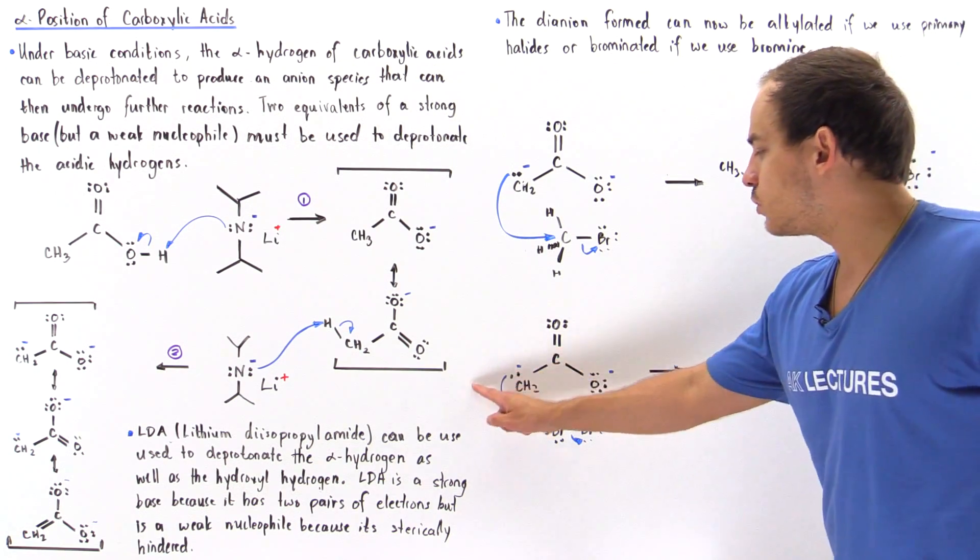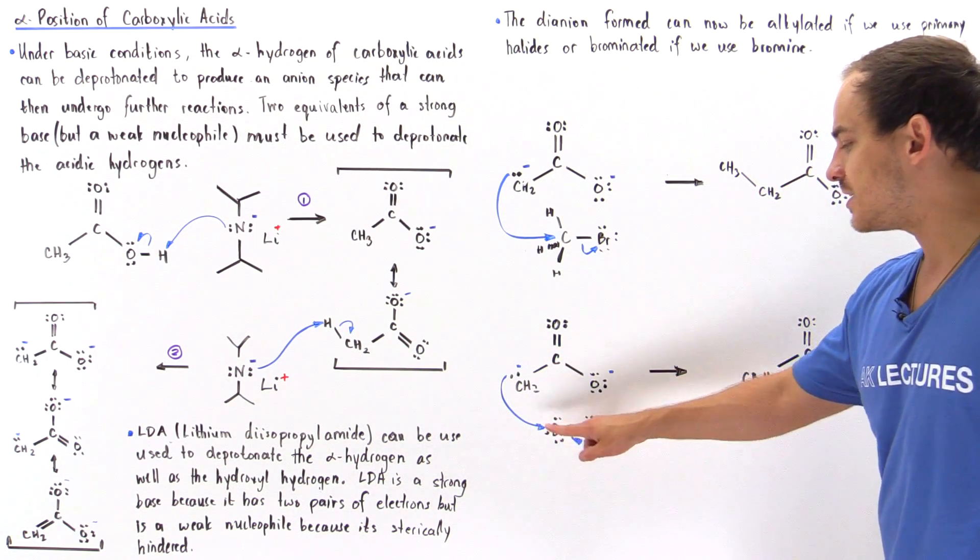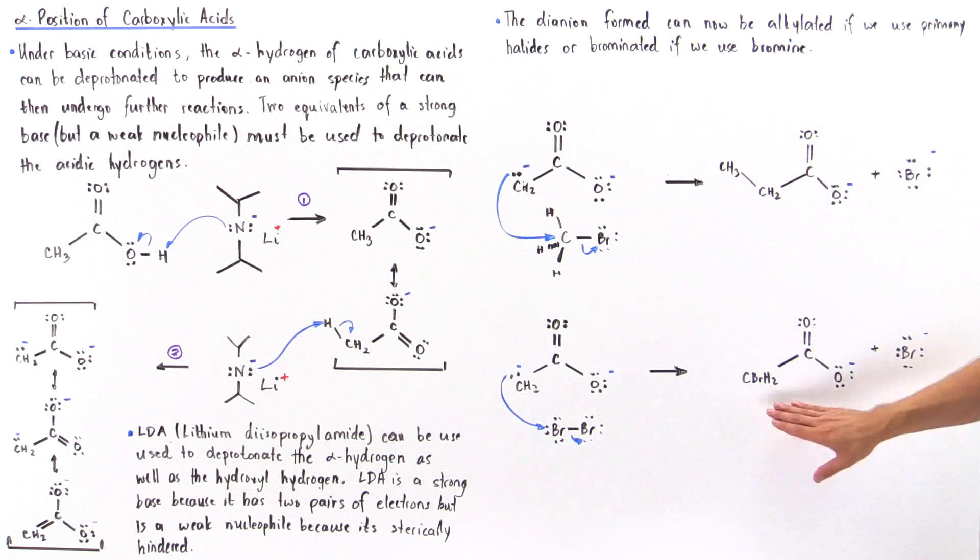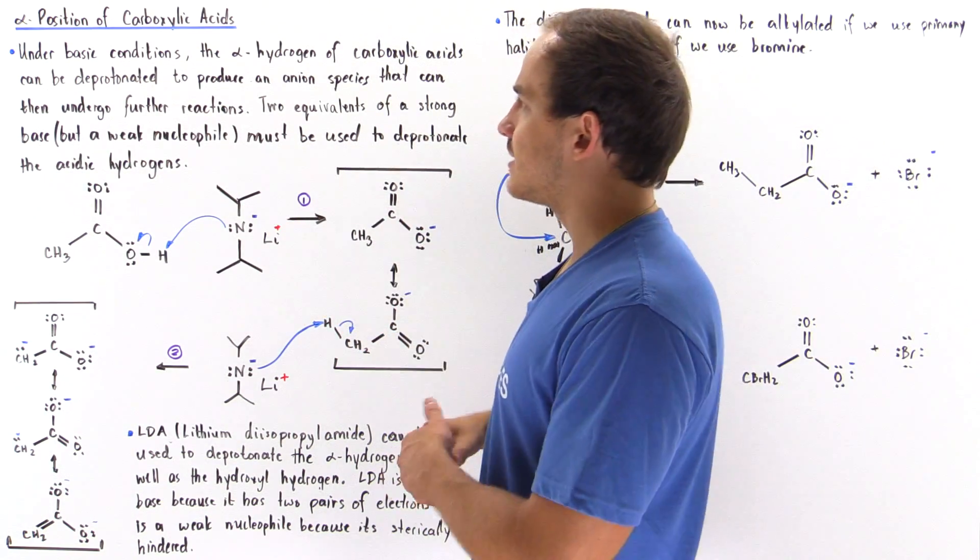So we have a nucleophilic SN2 reaction taking place, this bond breaks off, and we basically brominate our molecule, the carboxylic acid.